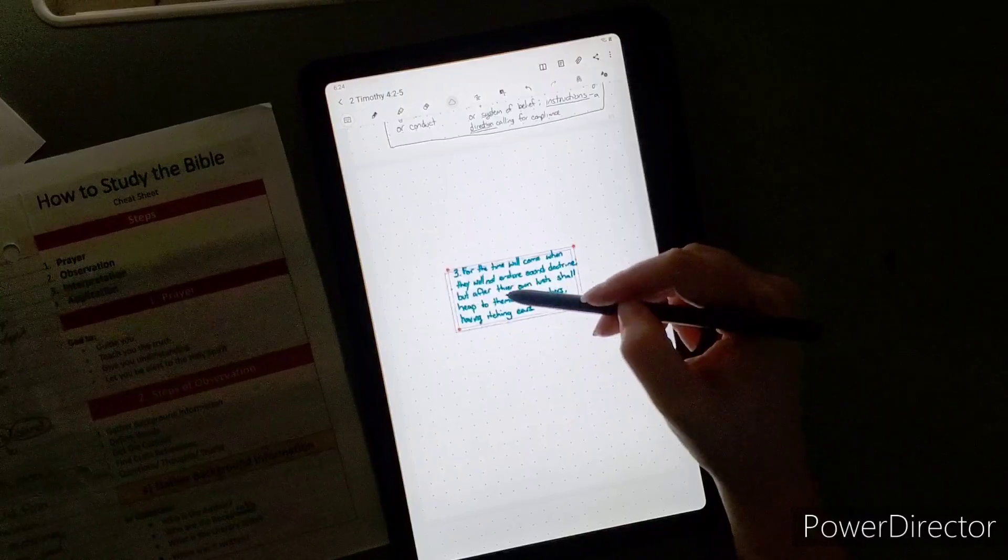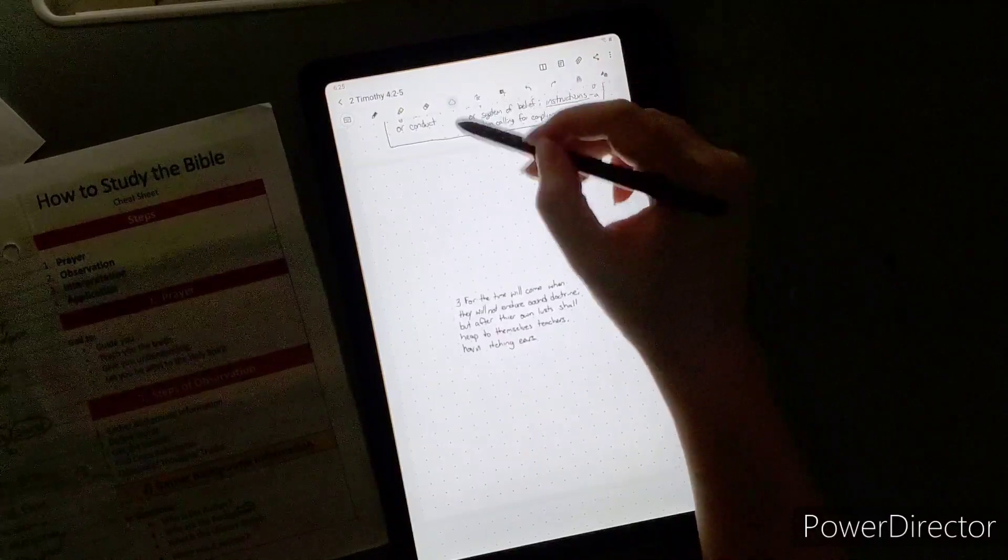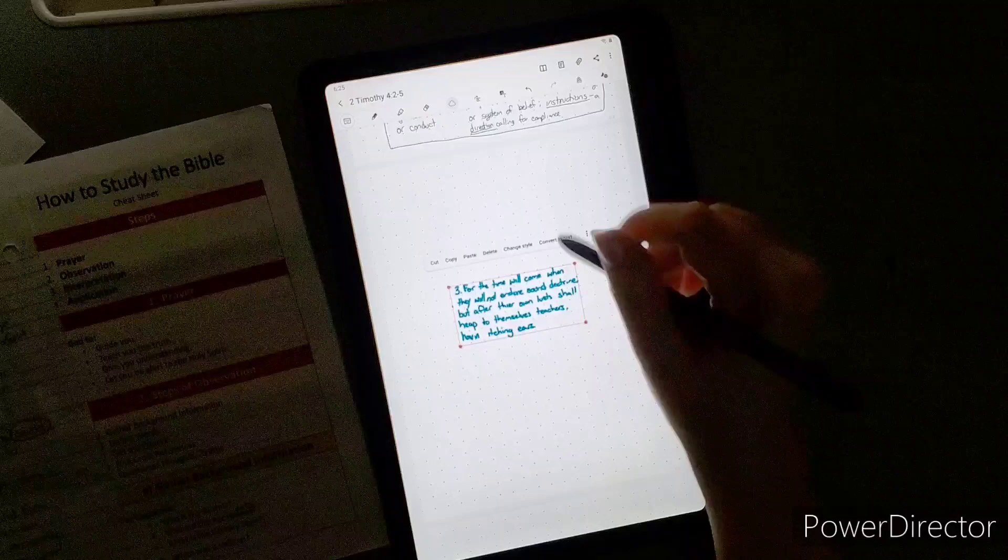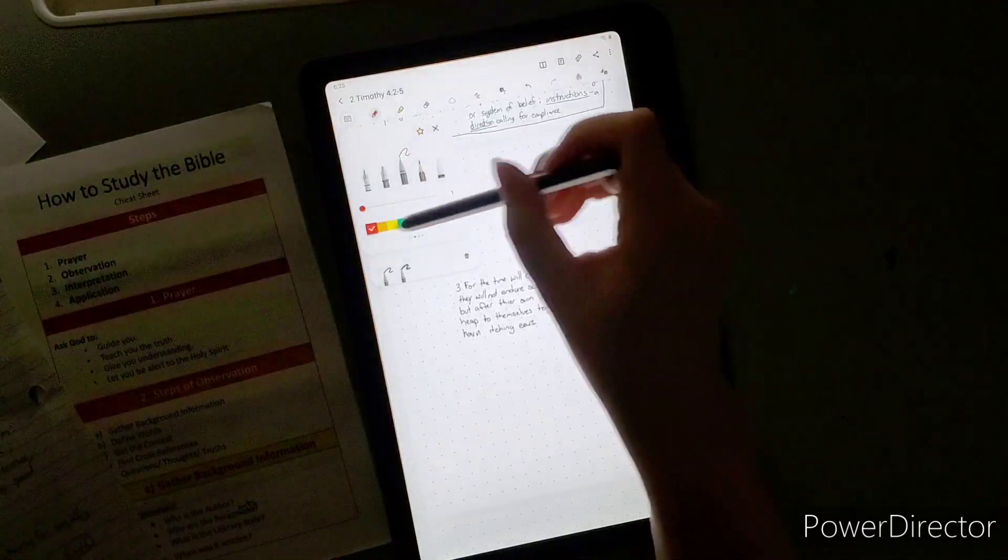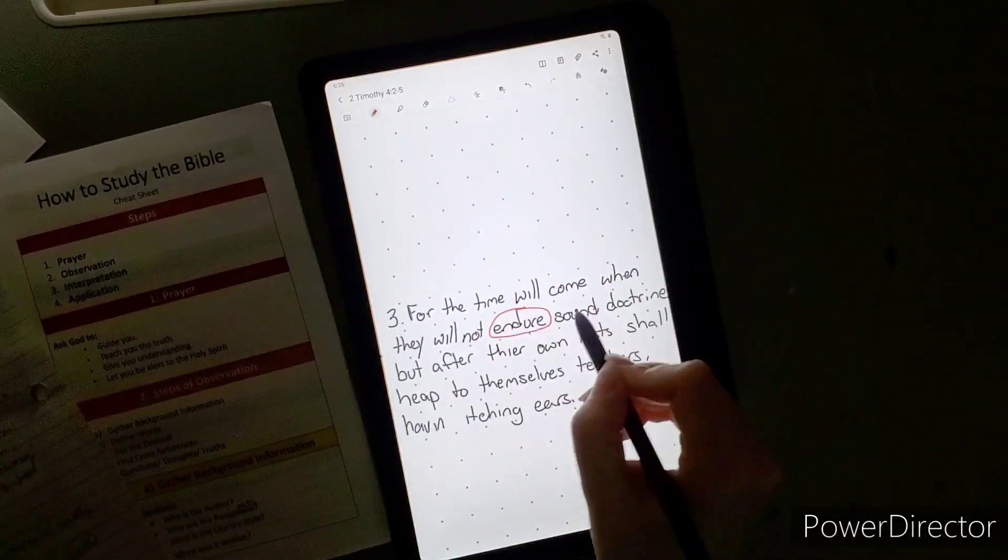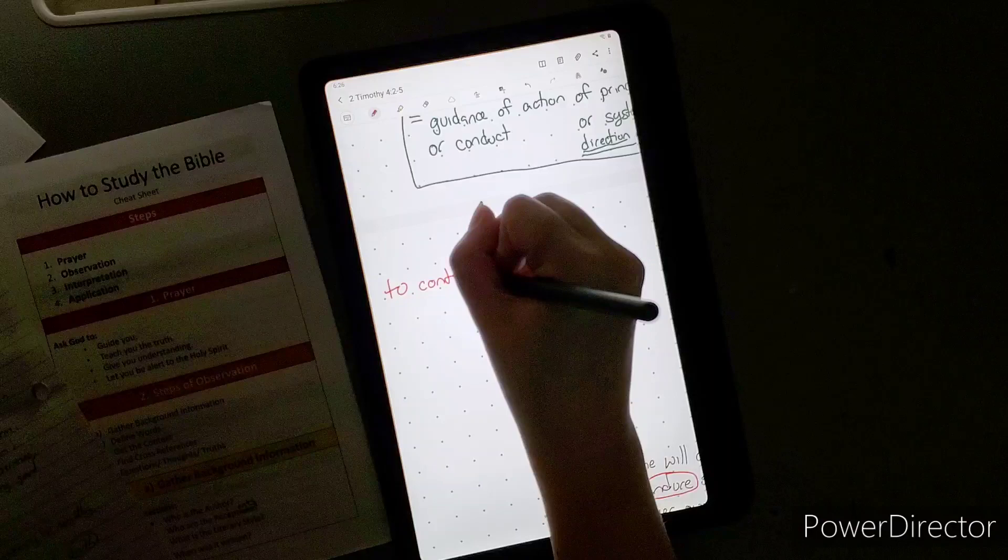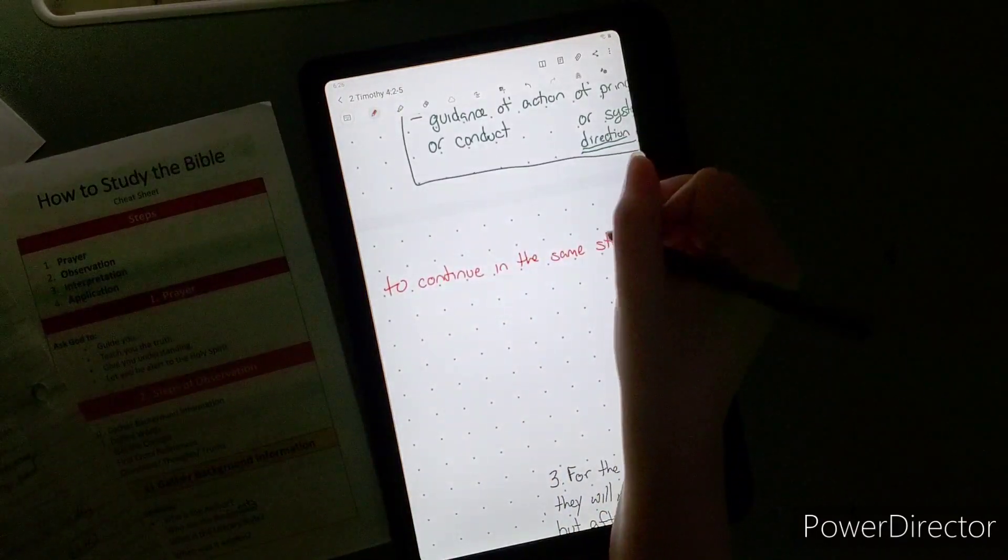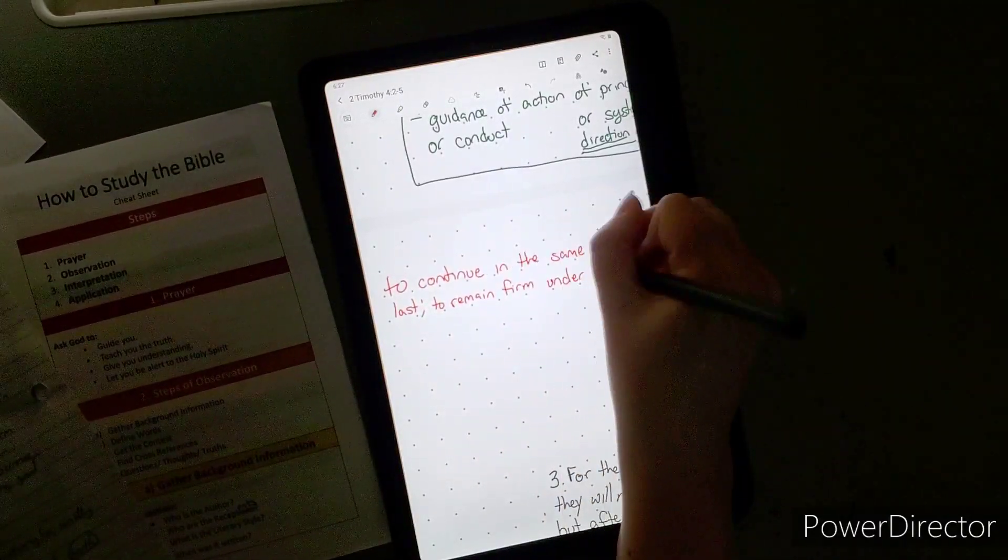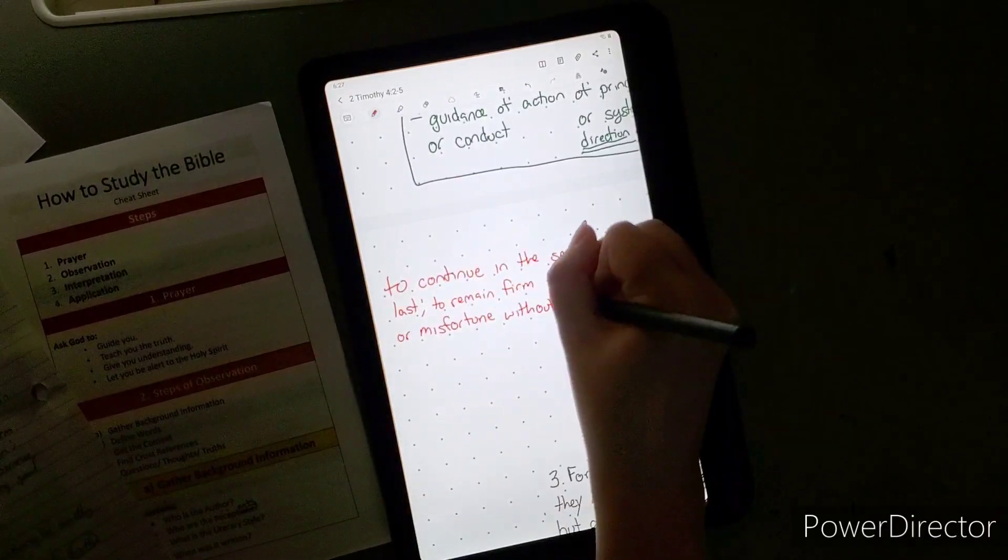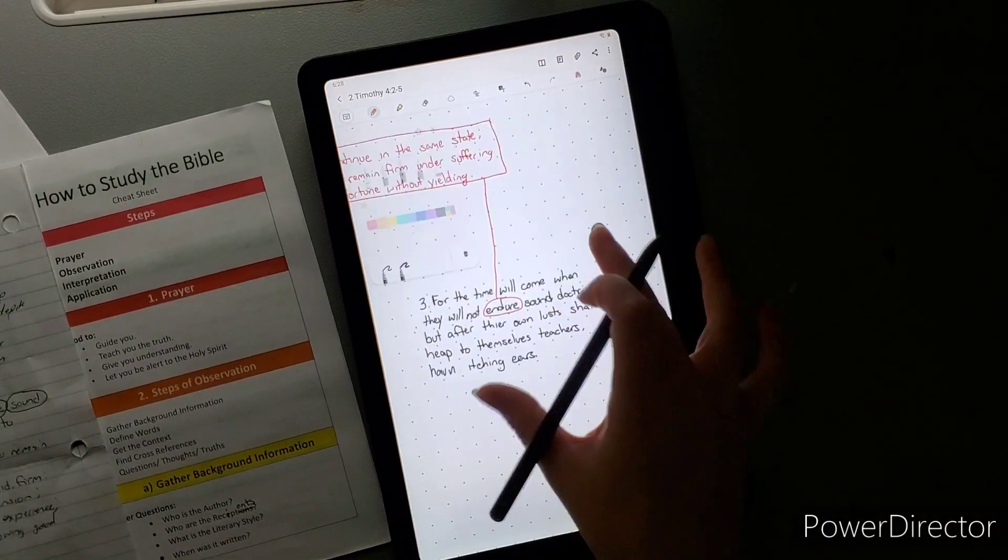Sound is basically free from error, firm, free from fallacy or misapprehension, exhibiting or based on thorough knowledge and experience, logically valid and having true premises, showing good judgment or sense. We already defined doctrine, but you see that today, people's doctrines and beliefs can seem crazy. I'm like how in the world did you even come to that conclusion? How could you even think that that is true? It's just crazy. You need to stick with the Bible. I understand that people can misinterpret the Bible. Sometimes I think people wholeheartedly don't realize that they are misinterpreting the Bible.